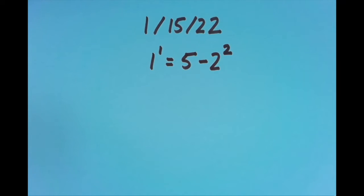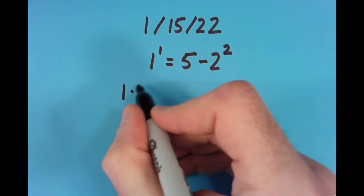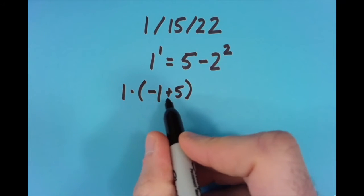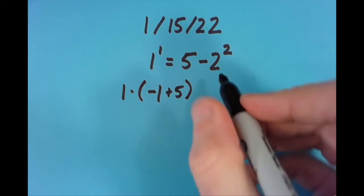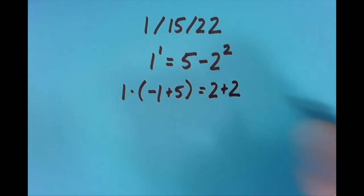I thought about how else I could do this, and I said, well, let me put the equal sign in a different place. So this time I did 1 times the quantity of negative 1 plus 5. So that gives us 1 times 4, which is 4, and that's going to equal 2 plus 2, which is also 4.